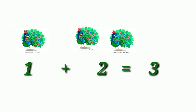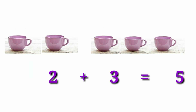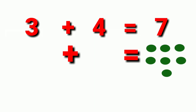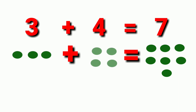One peacock plus two peacocks is equal to three peacocks. Two cups plus three cups is equal to five cups. Three plus four is equal to seven. Now draw bits to match the given numbers and add them.